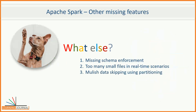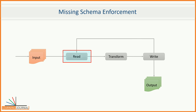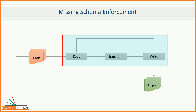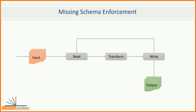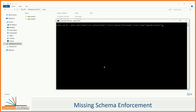There are a few other common problems: schema enforcement, too many small files in real-time scenarios, and mulish data skipping using partitioning. Let me first explain the schema enforcement problem. Let's assume you have a batch processing job. It reads some data from an input location, performs a transformation, and writes it to the output location, repeating the same for the next batch. Let me show you the content — nice and simple, two records.